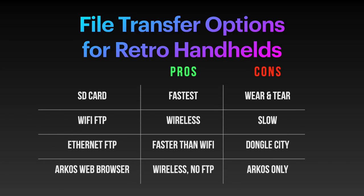Wrapping up with a pros and cons list: the SD card is the fastest, but it has the most risk because you put a lot of wear and tear on your device by taking that SD card in and out — at some point the pin connectors or the SD card slot are going to wear out, so think about that if you plan on using the device long-term. Wi-Fi FTP is definitely convenient but slow. Ethernet FTP is much faster than Wi-Fi, but you have to deal with dongles and have an Ethernet cable handy. If you're running ArcOS, the web browser option is worth considering because it's wireless and you don't need an FTP client — and the only downside is you need to be running ArcOS, which is a lovely operating system.